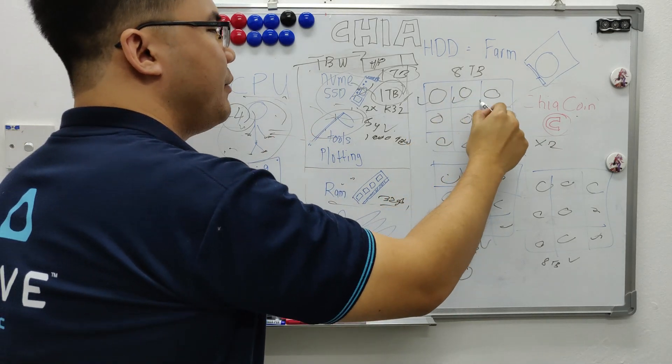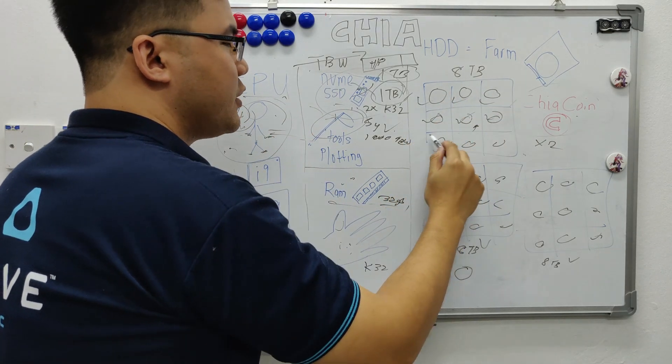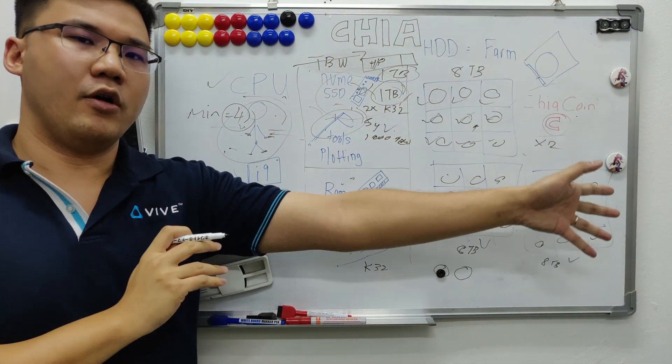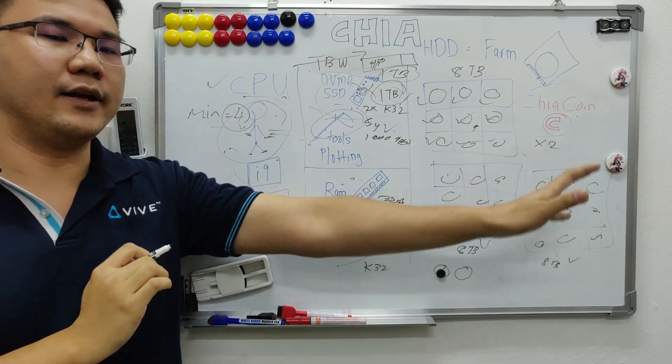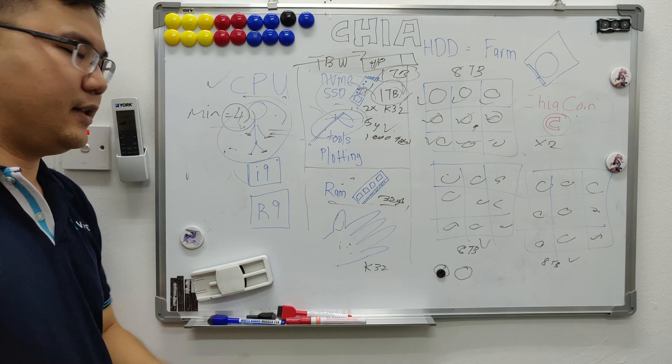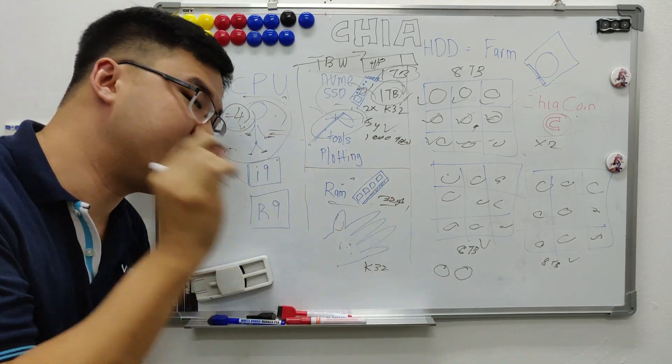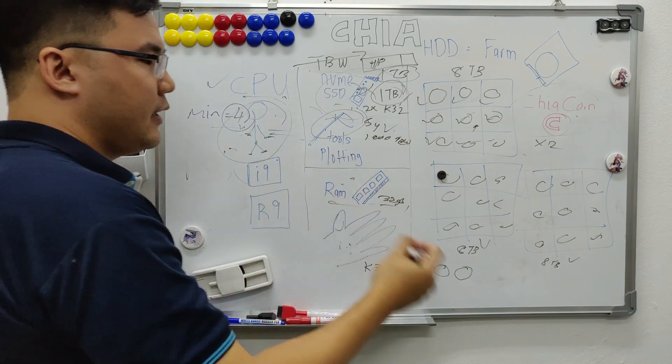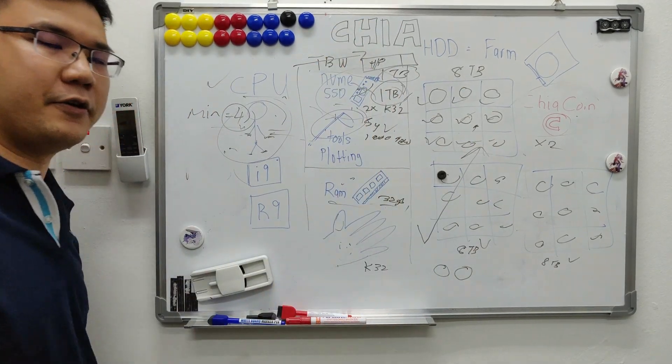Plot as much as possible, grow your farm as big as possible. The more, the faster, the better. You get higher and higher, higher chance to win against the internet in your luck-based game to get a Chia coin. Because now, the whole internet is growing exponentially, the amount of storage.